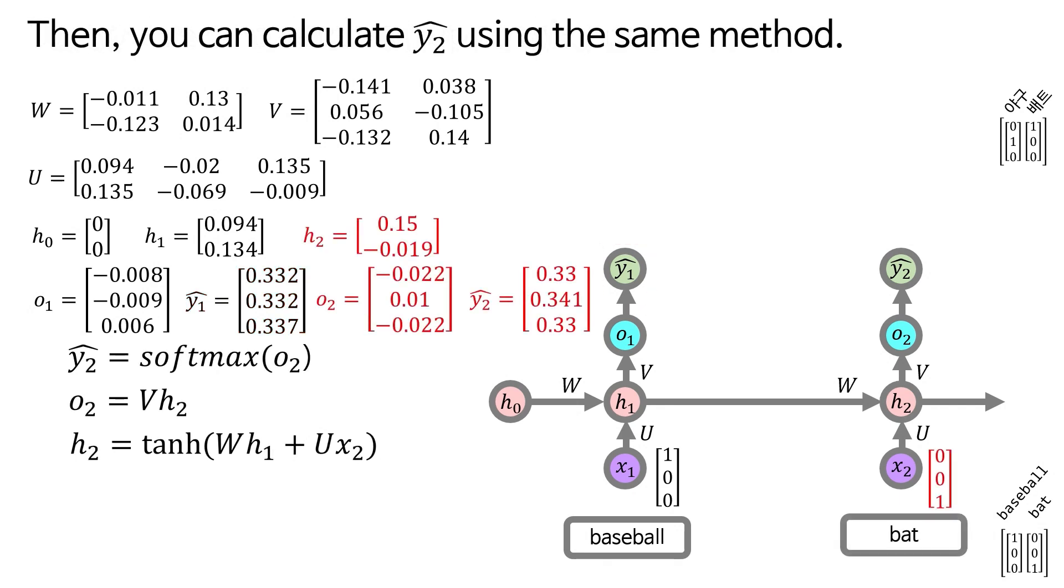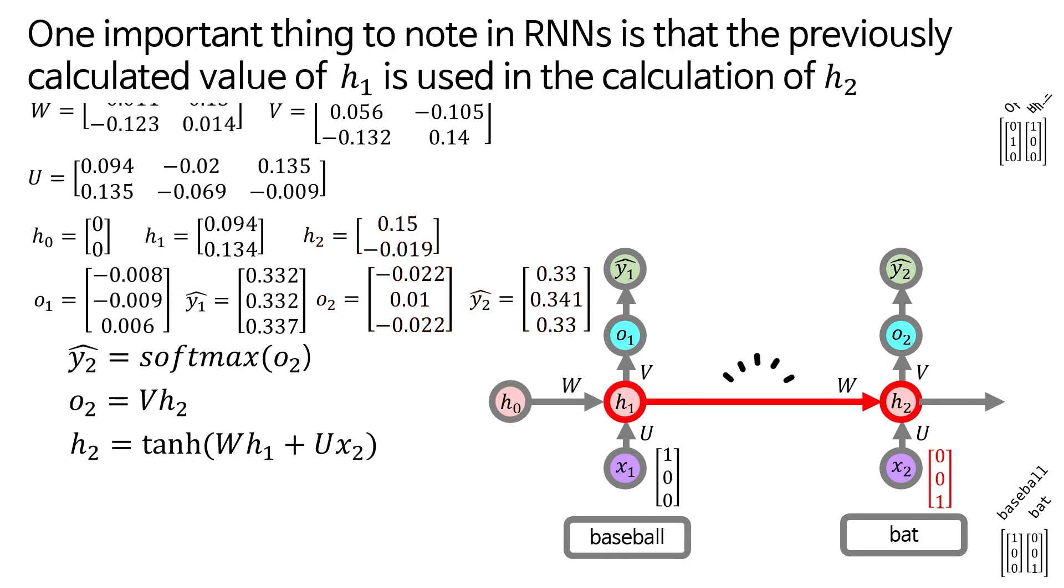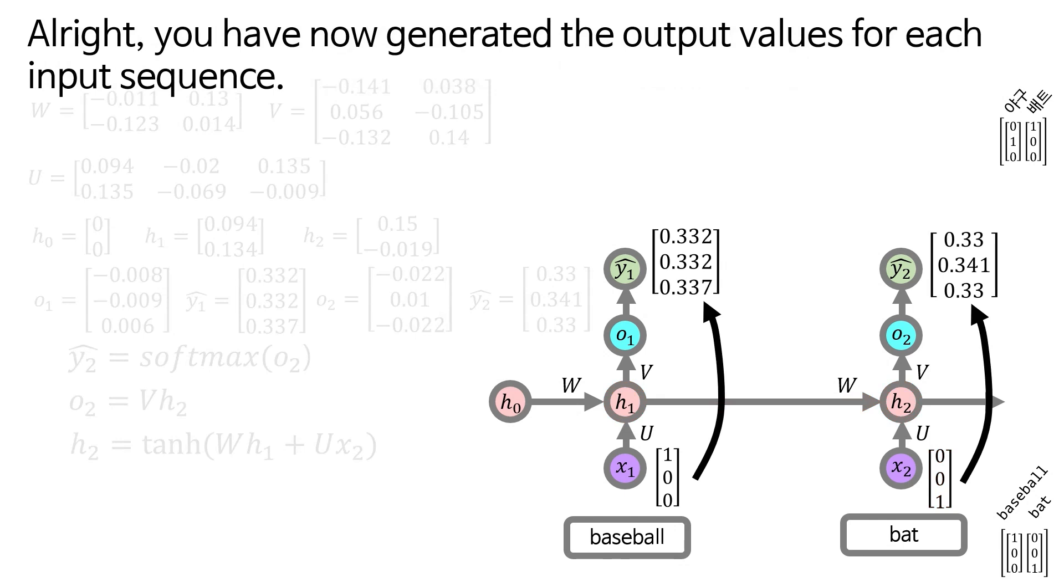In the case of O1, it is calculated as follows. So, you've calculated Y1 hat up to this point. Then, you can calculate Y2 hat using the same method. One important thing to note in RNNs is that the previously calculated value of h1 is used in the calculation of h2. Alright, you have now generated the output values for each input sequence.